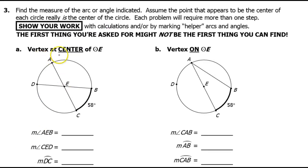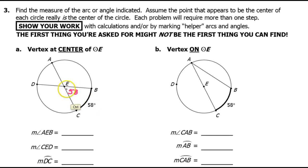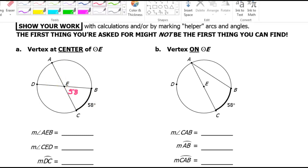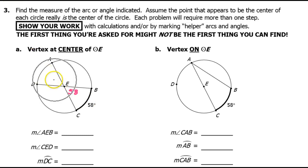For number three, part A, the vertex is at the center, so the angles and arcs will have the same measure. That means this angle will also be 58 to match. These are vertical angles, so this will also be 58. The arc will match the angle, so this arc will also be 58.